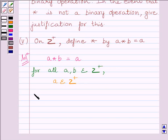So we can write: A star B equals A belongs to Z+. Therefore, this implies star is a binary operation.